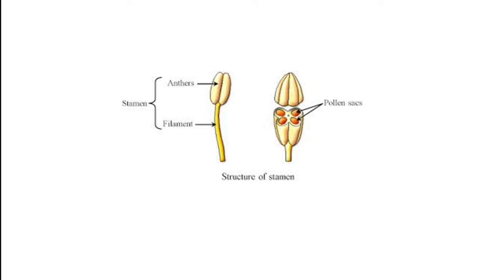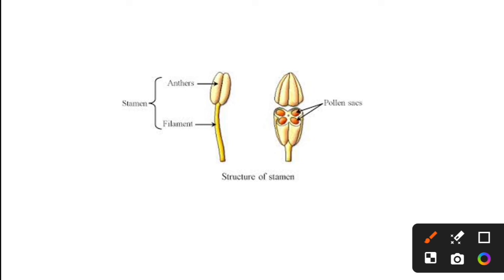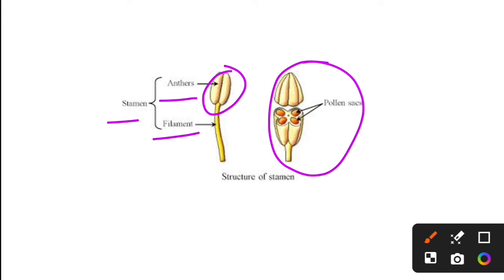Now the stamen structure — we need to know how it is. The stamen structure has the anther, which is mainly bilobed in angiosperms. This is our filament, which is a cylindrical stalk. The anther contains pollen sacs. When we cut the anther, we see the pollen sacs, and inside the pollen sacs are the pollen grains.